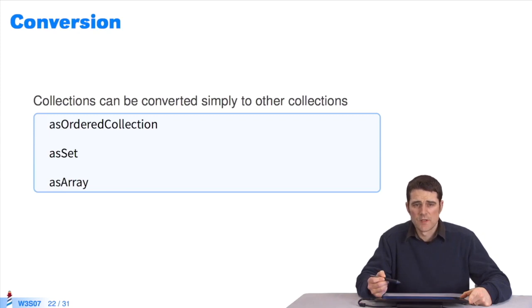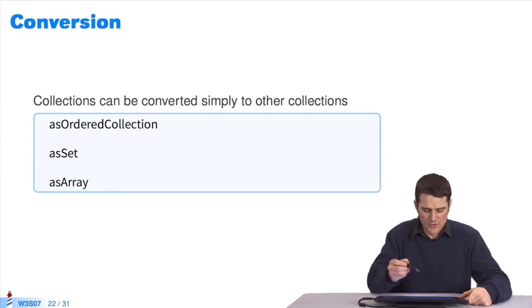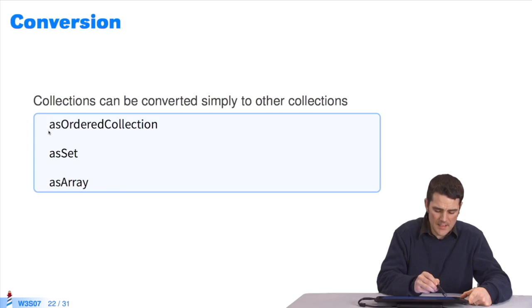Conversion methods are convenient to turn a collection into something else. It's always the same: AS: plus the name of the collection you want to get.